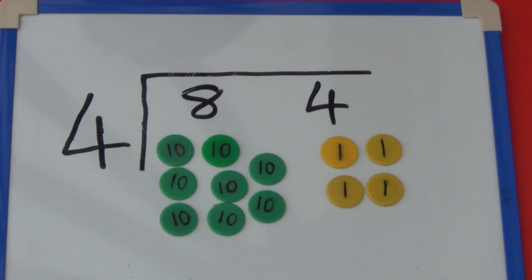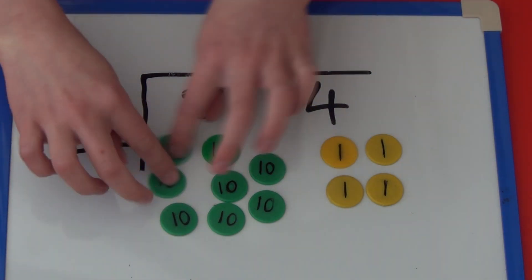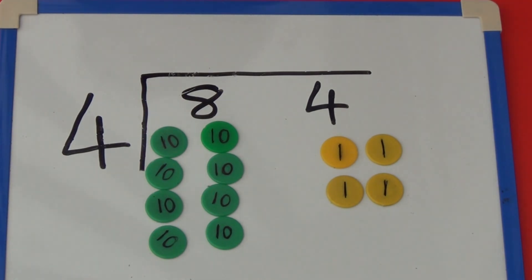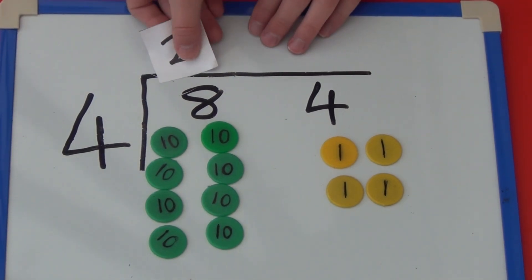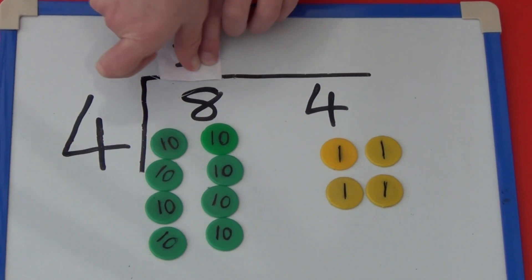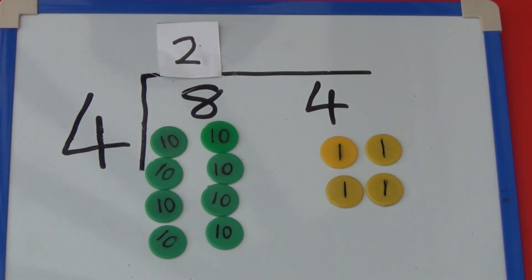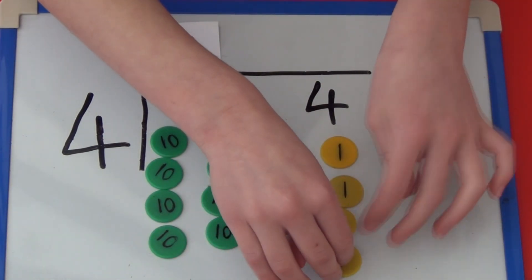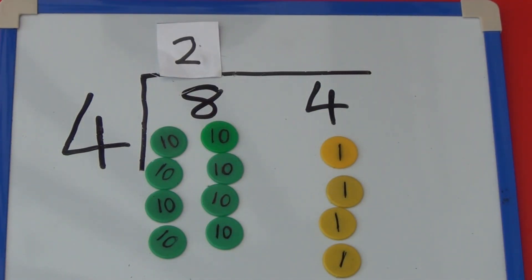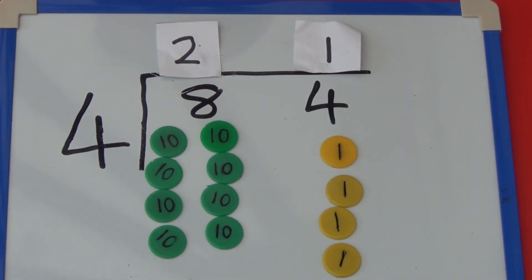I'm going to start by dividing my tens into groups of 4 and then my ones into groups of 4. I'm going to see how many groups of 4 tens I can make. We can make 2 groups of 4 tens counters, so I'll stick 2 above the line. Now I'm going to see how many groups of 4 ones I can make. We can make 1 group of 4 ones, so I'll stick 1 above the line. 2 tens and 1 one is 21, so 84 divided by 4 equals 21.